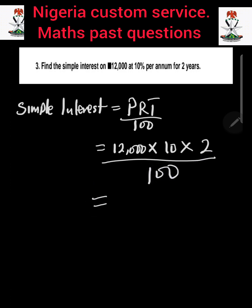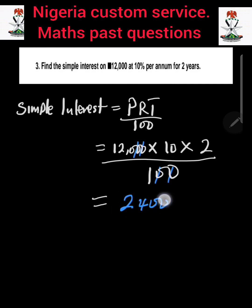So we can cancel one zero from 10 and one zero from 100, then cancel another zero. Then 120 multiplied by 10 multiplied by 2 gives us 2,400 naira. That is how to answer this question.